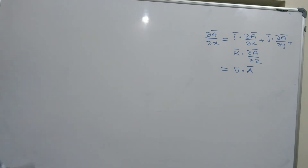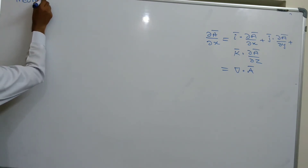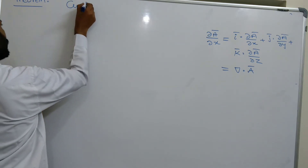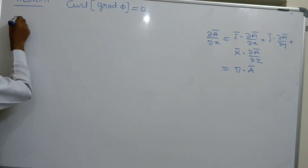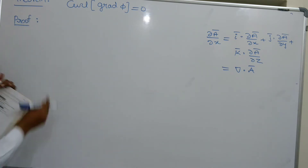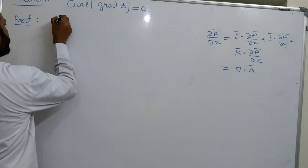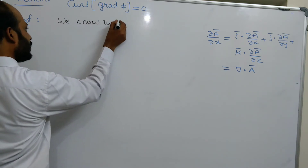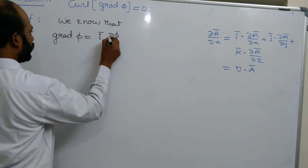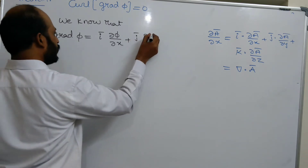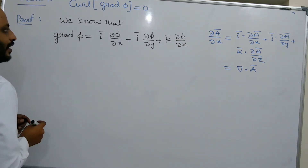Next theorem: Curl of grad phi equals zero. We know that grad phi equals i-bar into dou phi by dou x plus j-bar into dou phi by dou y plus k-bar into dou phi by dou z.